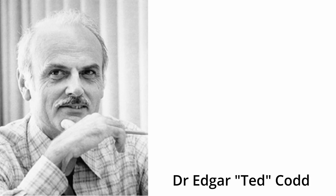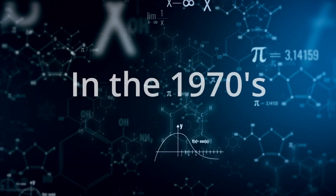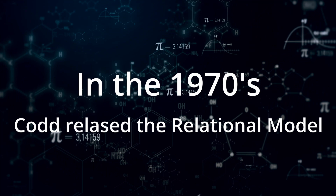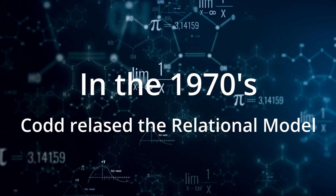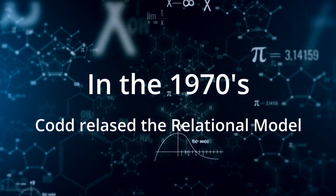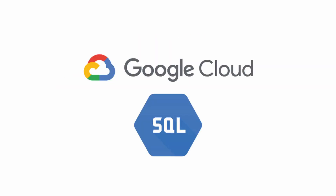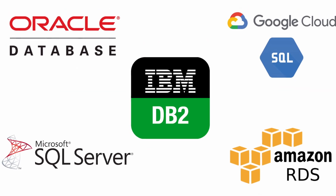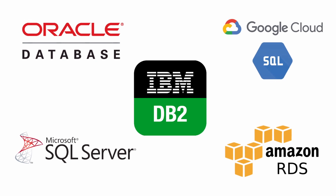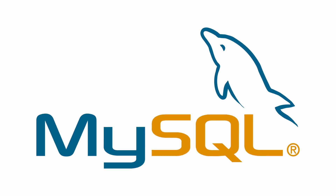But Edgar Codd entered the scene, and he wanted more than great dinner conversations. He reduced data and data relationships into mathematics, and in 1970 he released the relational model, which is a systematic approach of connecting and maintaining data based on mathematical rules. Technology companies like Oracle, IBM, Microsoft, Amazon, Google used his relational model to create their own relational databases. Popular open source databases like MySQL are also based on it.